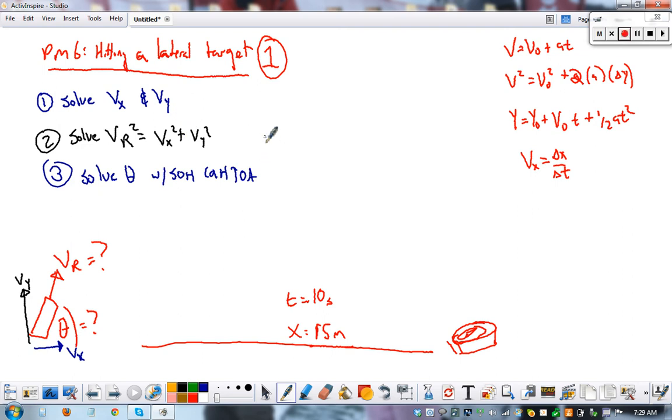So let's do our Vx and our Vy first. It turns out velocity in the x is always really easy. Velocity in the x is just change in distance over change in time, because forward motion is constant. So it's fifteen divided by ten, equals one point five meters per second. So this is one point five.